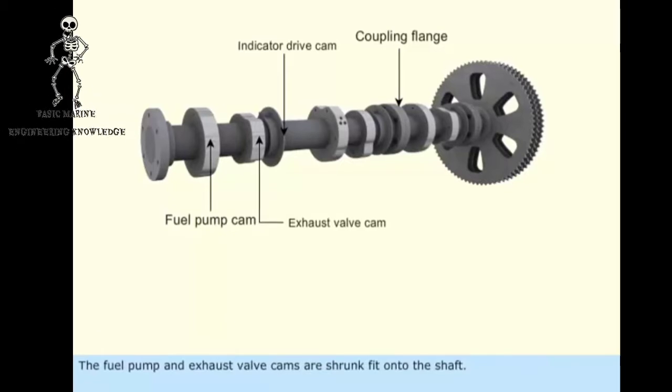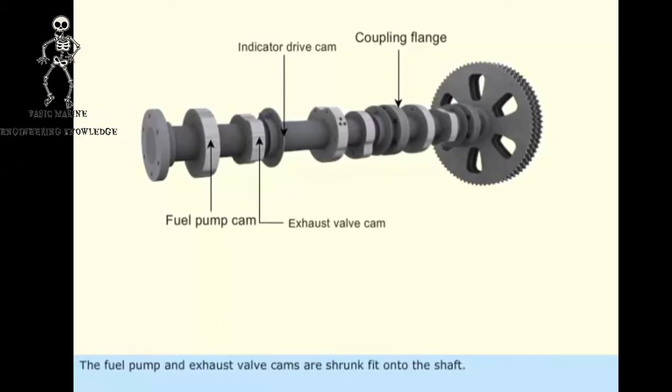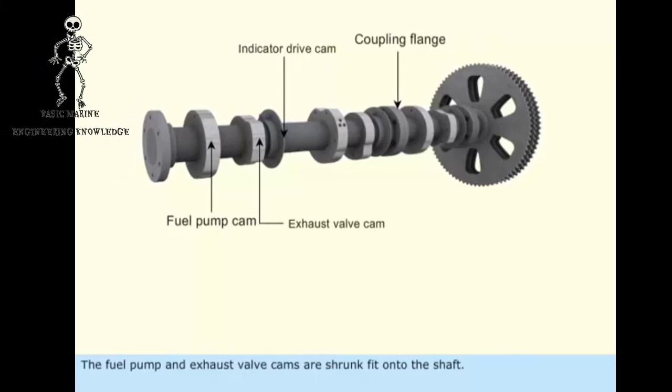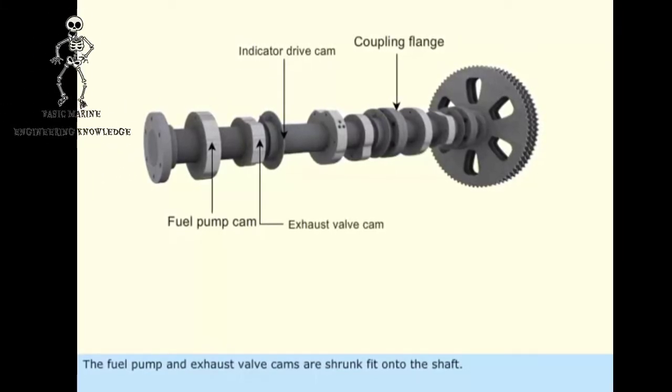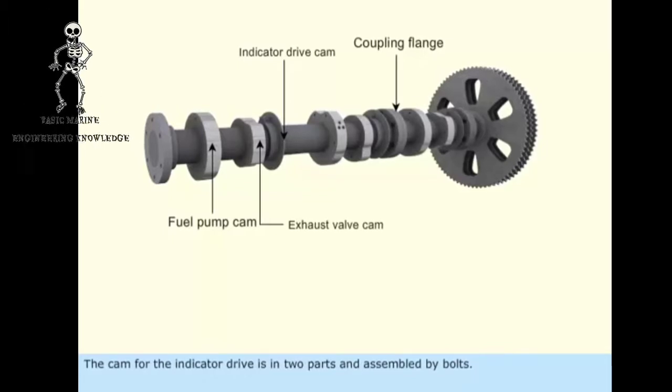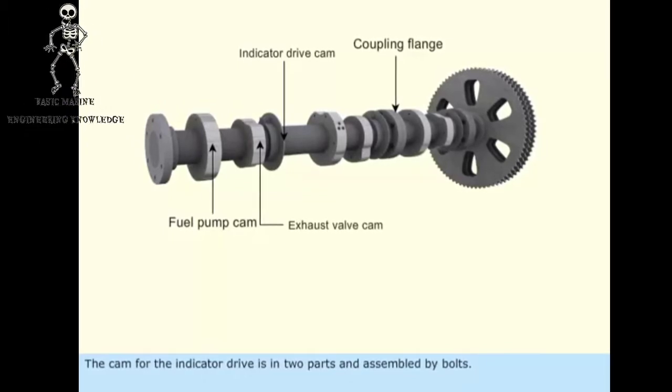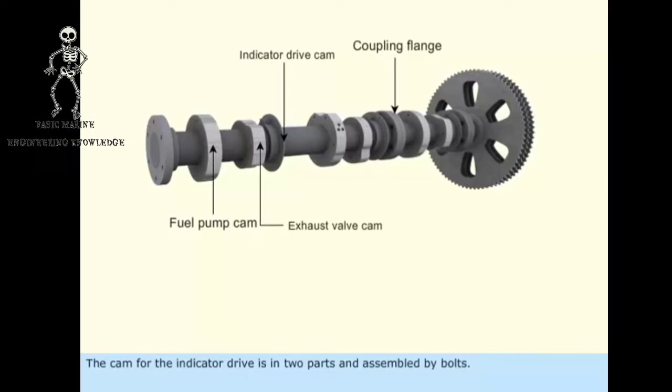The fuel pump and exhaust valve cams are shrunk fit onto the shaft. The cam for the indicator drive is in two parts and assembled by bolts.